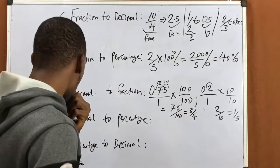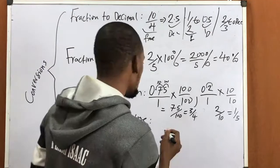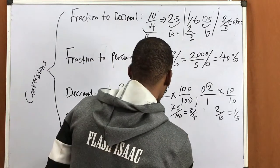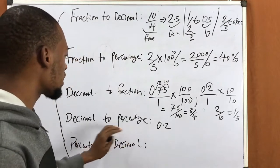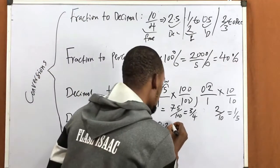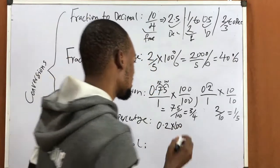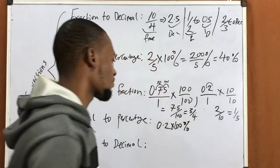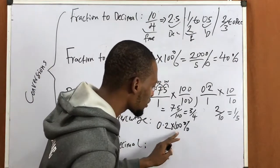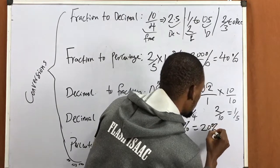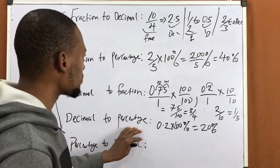Converting from decimal to percentage is very easy. Let's say you are given 0.2 decimal to convert to percentage — simply multiply by 100 and add the percentage sign. So 0.2 times 100 is 20, giving you 20%.